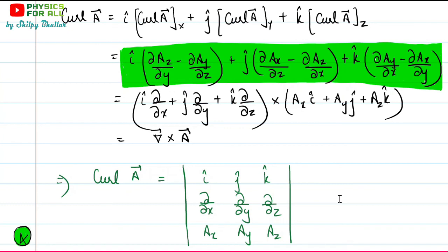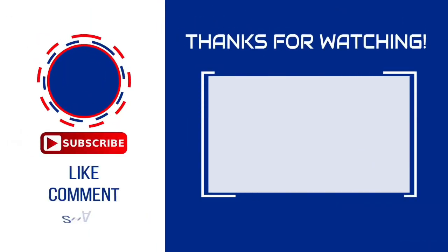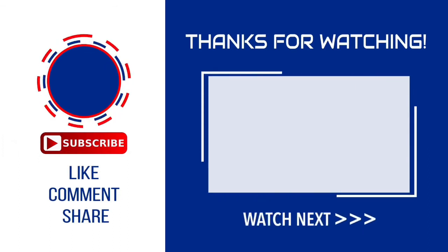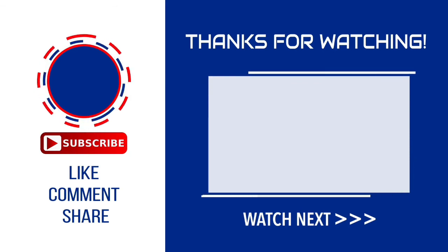That's all for today. Now since we know how to deal with curl and its expression, we will discuss in the next video another most important theorem of vector analysis — Stokes' theorem. We are done with the Gauss divergence theorem, which involves divergence. In Stokes' theorem, we will use the curl operator and make use of all the expressions we derived in understanding curl in terms of Cartesian coordinates. Thank you. See you next time.